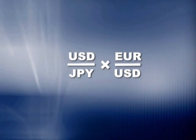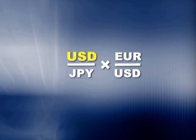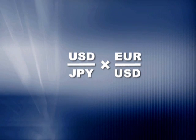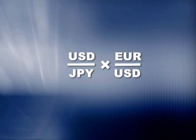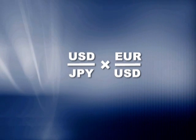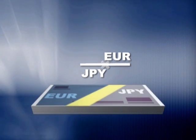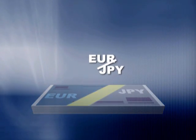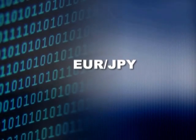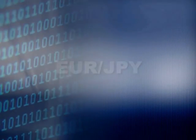Can you see what happens? In the first pair the dollar is the numerator, and in the second one the denominator. Using the rules of arithmetic we can reduce the US dollar, and as a result we receive the euro/Japanese yen cross rate. This operation takes place automatically and instantaneously — we don't notice it at all.